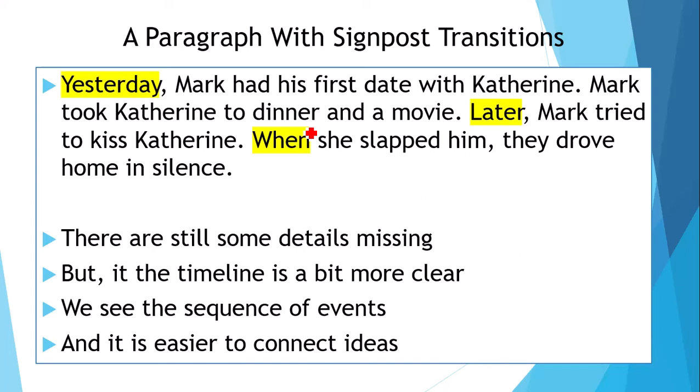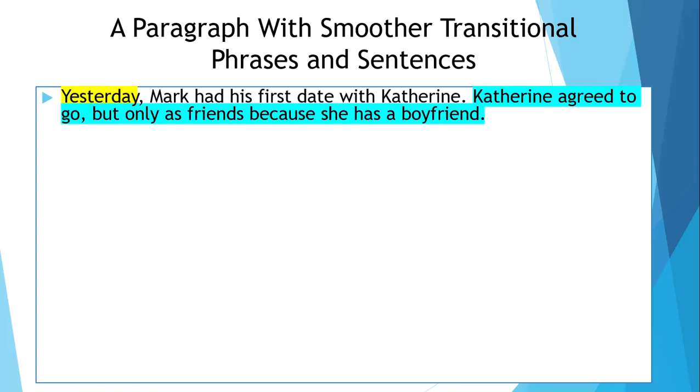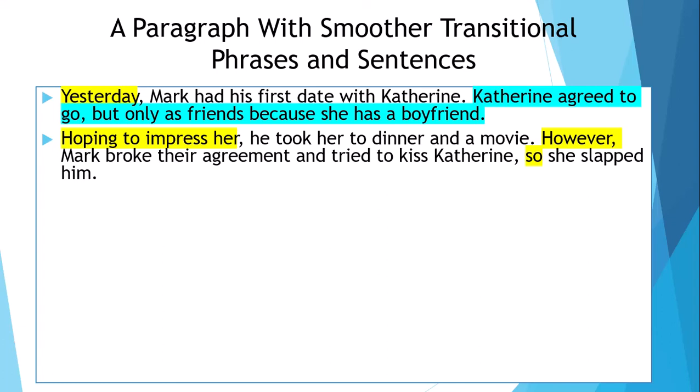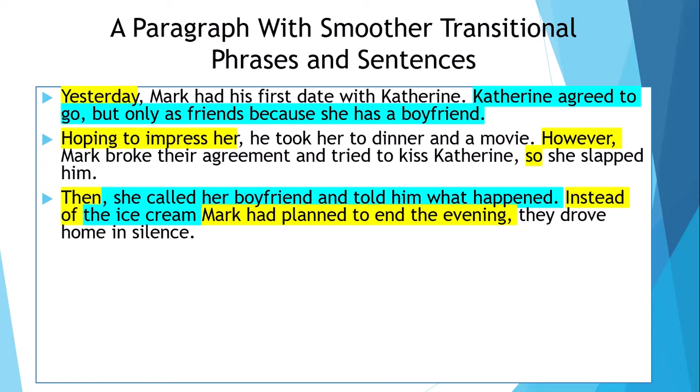So instead, let's try to smooth it out with some transitional phrases. Yesterday, Mark had his first date with Catherine. Catherine agreed to go, but only as friends because she has a boyfriend. Hoping to impress her, he took her to dinner and a movie. However, Mark broke their agreement and tried to kiss Catherine, so she slapped him. Then she called her boyfriend and told him what happened. Instead of the ice cream Mark planned to end the evening, they drove home in silence. This is a lot more clear.